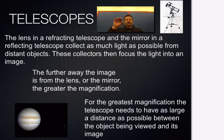And then, so the further away the image is from the lens or say the mirror and reflecting, the greater the magnification. So if it's farther away, then we have greater magnification. And if you want the most magnification, then the telescope needs to have a large distance, the largest distance possible between the object being viewed and its image. So the farther our telescope can be, the more magnification we can see.